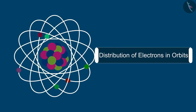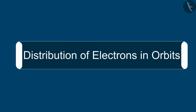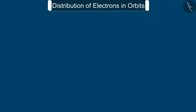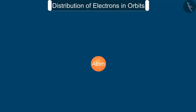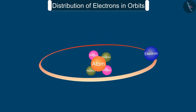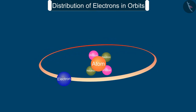Welcome to this video session. The topic we are going to study in this session is the distribution of electrons in orbits, which we also know as electronic configuration. In the previous video, we saw that the protons and neutrons in an atom exist in its nucleus and electrons revolve around the nucleus in well-defined orbits. Let us now see how electrons are distributed in different orbits of an atom.